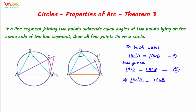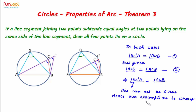So we can see that in both cases, angle BC dash A — this angle here — is equal to angle ACB — this angle here. In the first case, for triangle BC dash C, this angle is the exterior angle and this angle is the opposite interior angle. And we know that under no circumstance can an exterior angle be equal to the opposite interior angle. So this cannot be true. Hence our assumption is wrong, and the circle passes through point C.